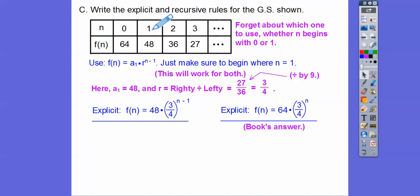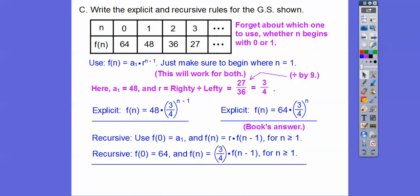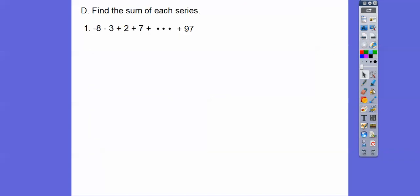If we plugged in N equals one right here, one minus one is zero. So it's three fourths to the zero is one to get me this 48 right here. So either one's fine with me. So the recursive is you say F of zero equals the first term here at 64. And then F of N is R times F of N minus one. So there it is. And then so remember, we always start with the next N value. Since F of zero equals 64, then we got to start with the next N value right here. N is greater than or equal to one.